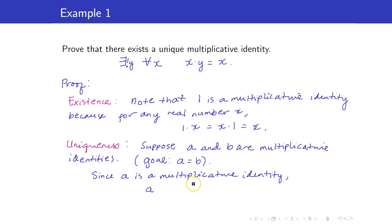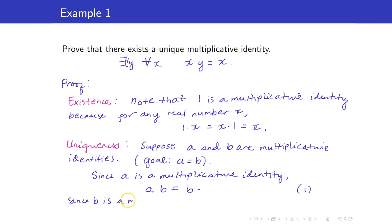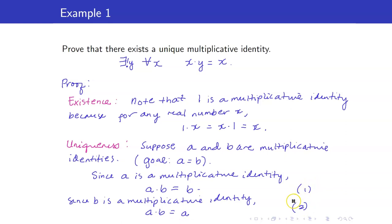Using a as a multiplicative identity: a times b equals b — call this equation 1. Similarly, since b is a multiplicative identity, any number multiplied by b equals that number, so a times b equals a — call this equation 2. Looking at equations 1 and 2, we get that a equals b. Therefore, we can now speak of 'the' multiplicative identity, because we've shown it is unique.